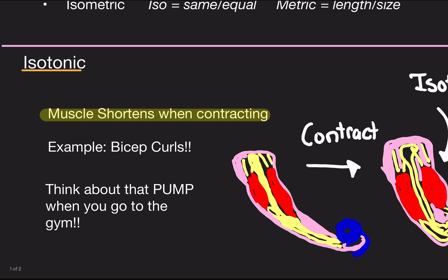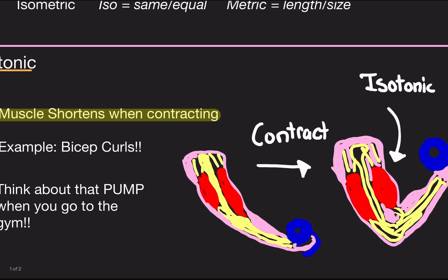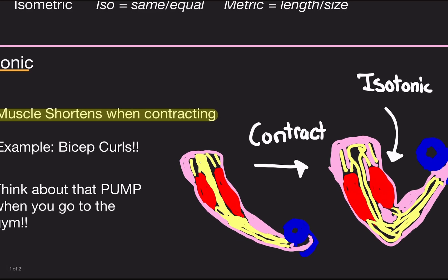Another example is sit-ups. When you're doing sit-ups, you are shortening the length of your ab muscles during the contraction. So that's what an isotonic contraction is — basically, the muscle shortens when contracting.